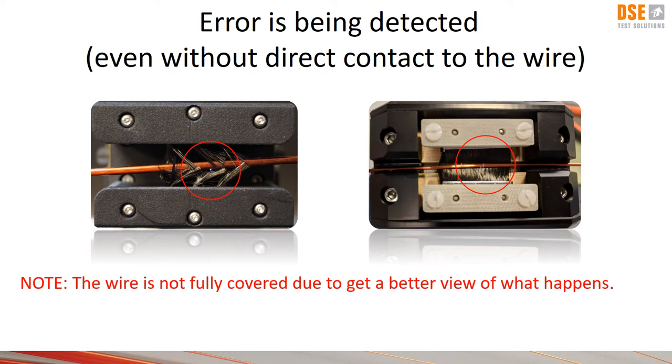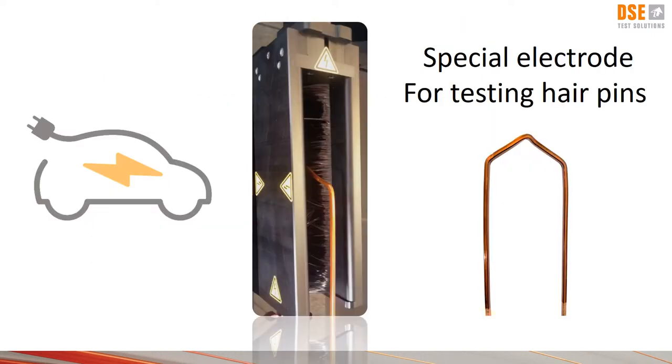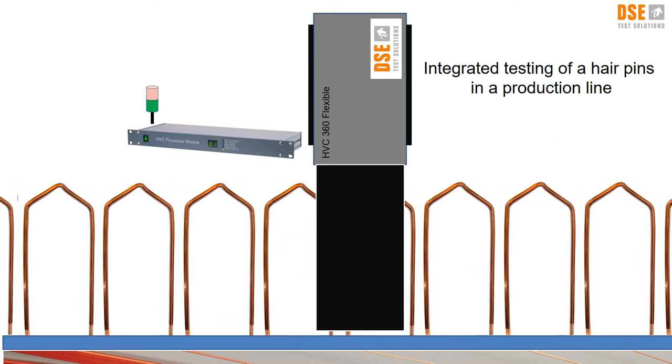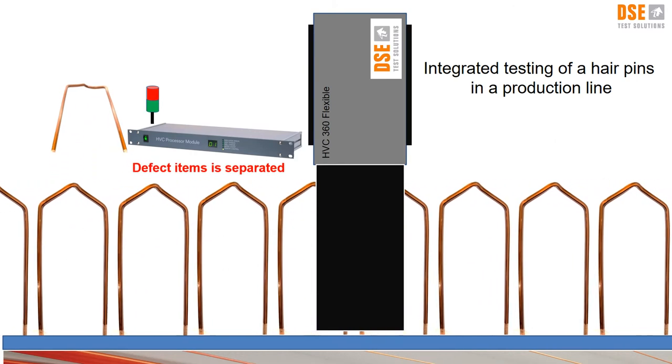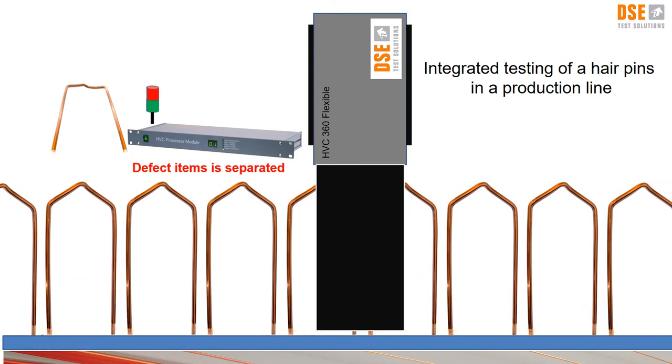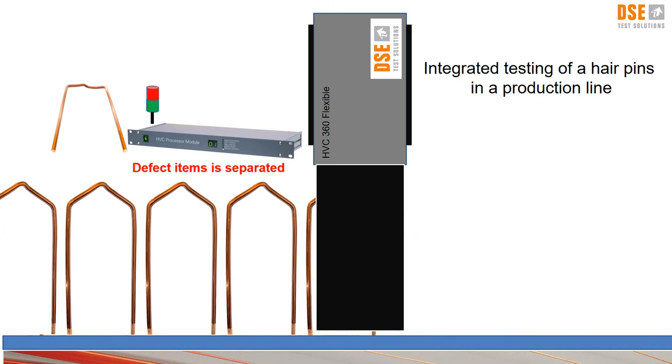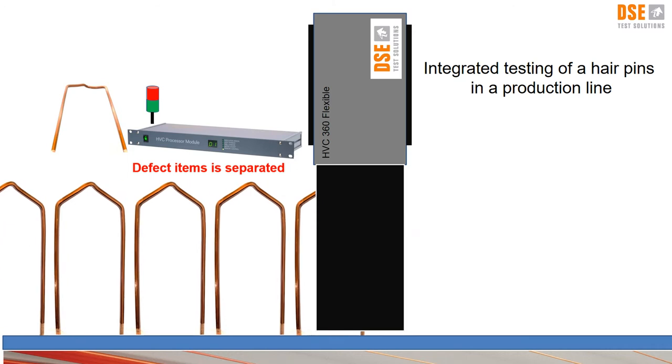Lately we have made a third model special for testing hairpins mainly being used in the automotive industry. The continuity tester is testing each hairpin and the tester can be a part of the production line which secures that each item is being tested and the item which failed is sorted away automatically.